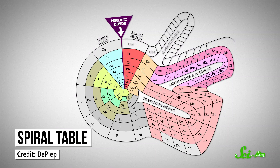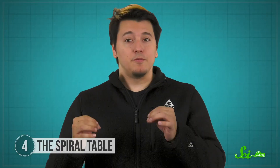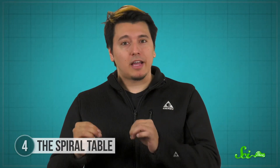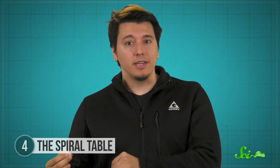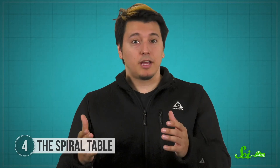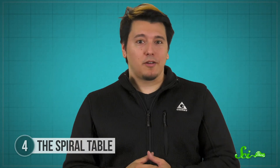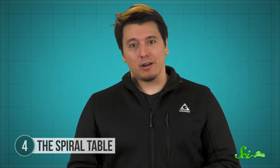In a spiral representation, though, it's easy to see that chlorine, argon, and potassium are three consecutive elements, each with one more proton than the last. Conversely, you might think that the lack of a gap makes it hard to see where periodicity actually repeats. It comes down to preference, but not a lot of people prefer the spirals.